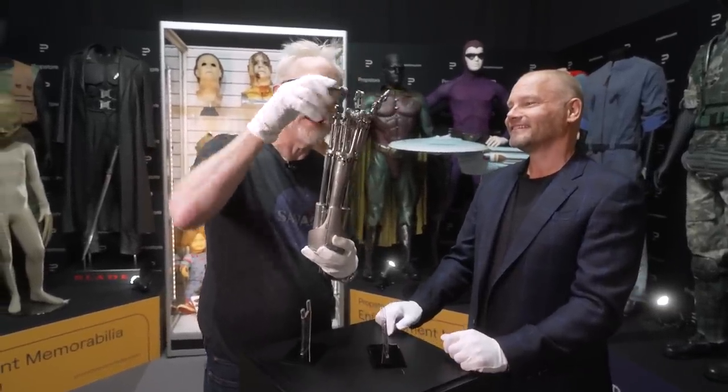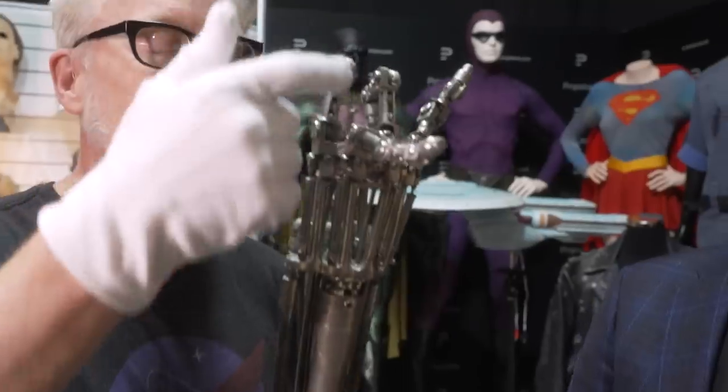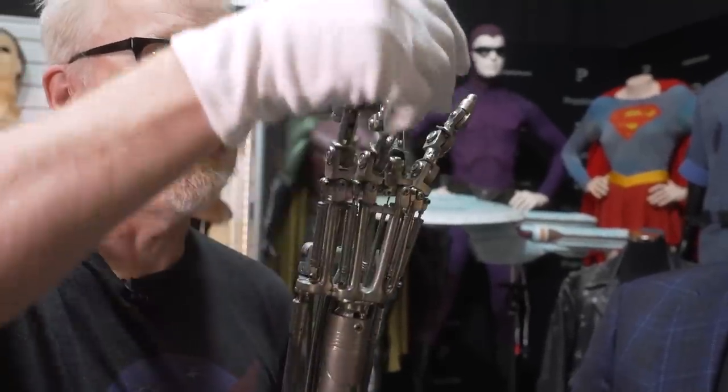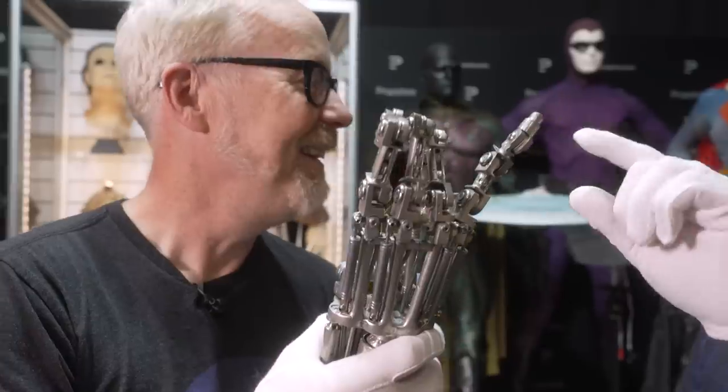I was noticing that. Let's be clear that the mechanical construction of the T1 and T2 endo arms is different. The first thing for me is the fingertips. That's the obvious tell.